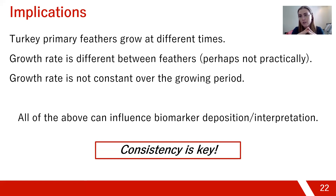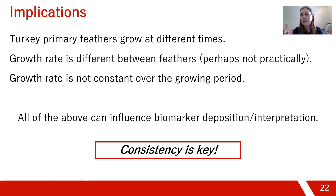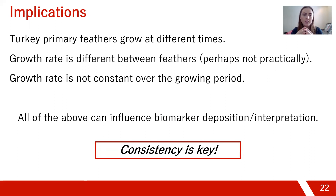The growth rate is not constant over the growing period, which is important if studies involve cutting feathers into sections to represent specific time periods. We can now do that more accurately because we know how feather length changes over time. All of these factors can influence how biomarkers are deposited in feathers and how we interpret the data, but now we have better context for future work. Overall, consistency is key — make sure you're selecting the same feathers and considering growth rate, especially in complex studies where feathers are divided into sections.